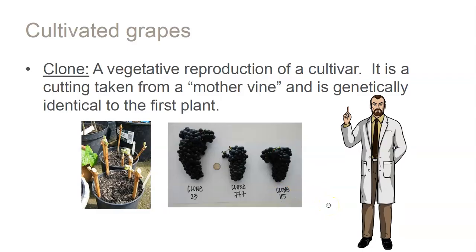Recall from 1104: clones are just vegetative reproductions of a cultivar. A cultivar will slightly change its genetics in the field over time. As it ages, the way genetics works, it starts to mutate a little bit. You're not getting a completely different cultivar, but you get different characteristics. Pinot Noir has some of the most clones of any grape variety out there, because Pinot Noir is one of the oldest cultivars we're growing.